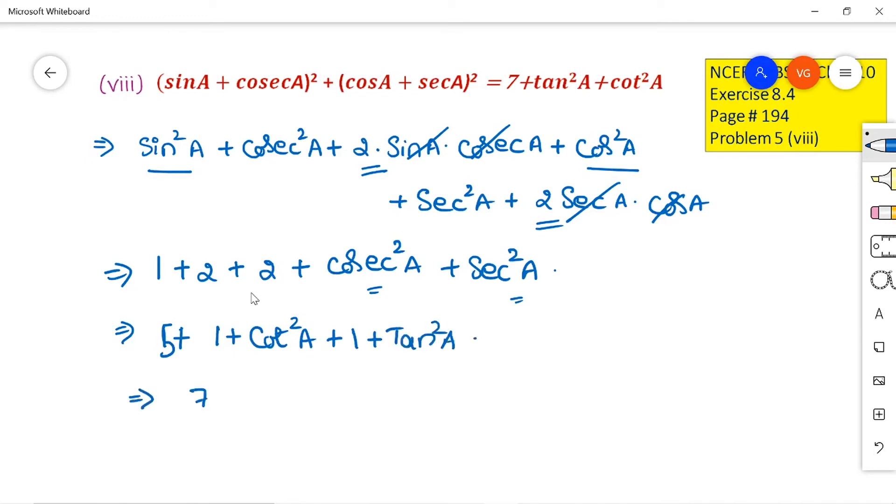So, this is the problem where we are using all the 3 identities here. So, the answer is 7 plus tan²A plus cot²A.